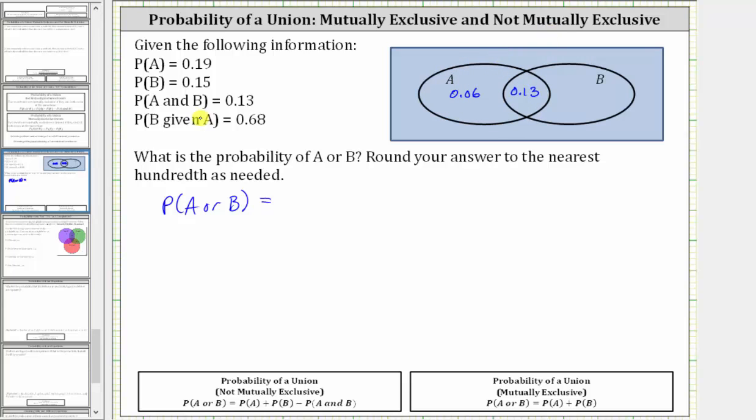Then we're told the probability of B is 0.15. Well, here's set B. We already have 0.13 in set B. 0.15 minus 0.13 is 0.02. The probability of only B is 0.02.